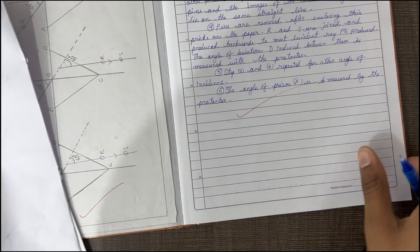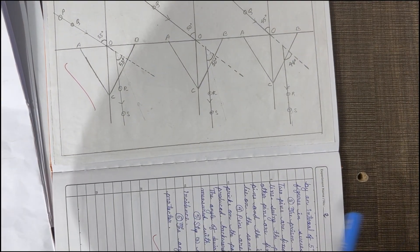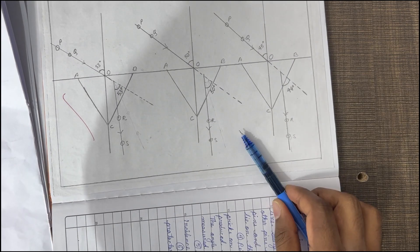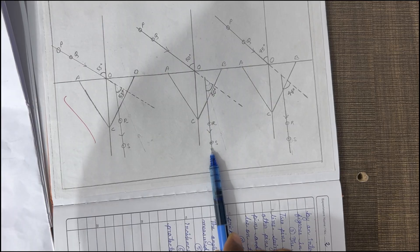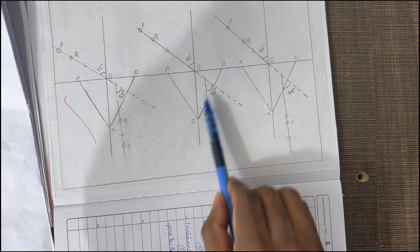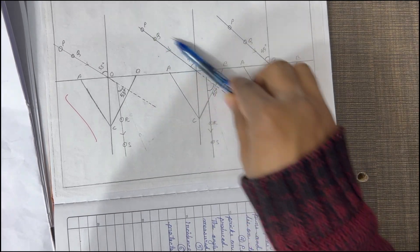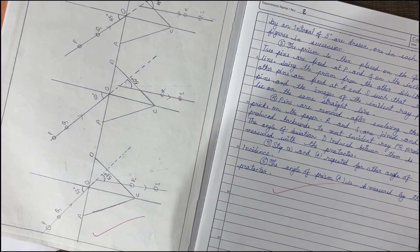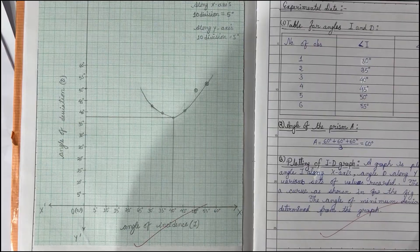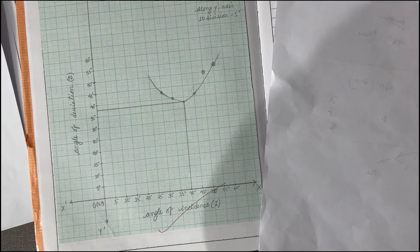What is the angle of deviation? The angle of deviation is the angle between the incident ray and the emergent ray. The minimum deviation is the lowest value of this angle, which we find from the graph boundary.